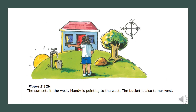In this picture, Mandy is pointing to the west. The sun sits in the west. The bucket and the tap are also to her west.